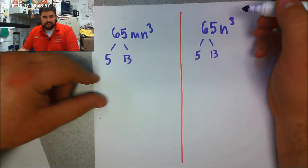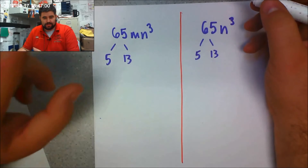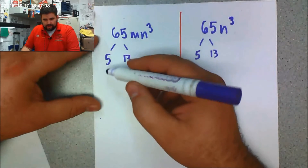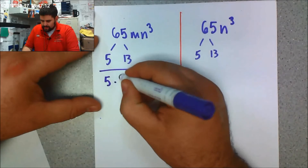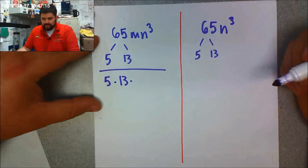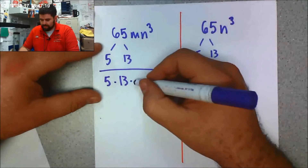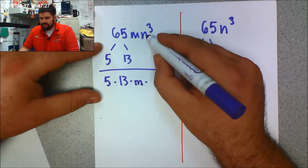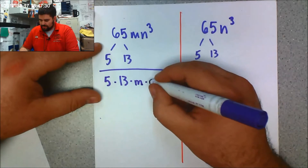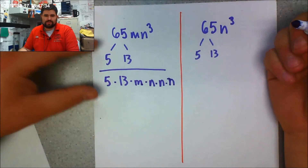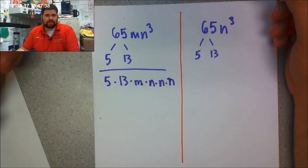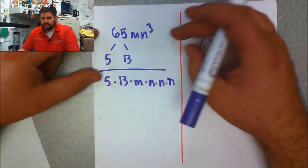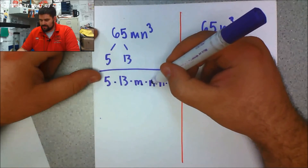Prime factorization isn't always going to be that easy, so don't expect your examples at home to always work out so slickly. After I do that, I rewrite it so I can do the variable factorization. For 65mn³: there's only one m so I bring that down, and n³ means n times n times n — that's really what exponents represent, repeated multiplication. Exponents tell you how many times a number multiplies by itself, so n³ = n × n × n.